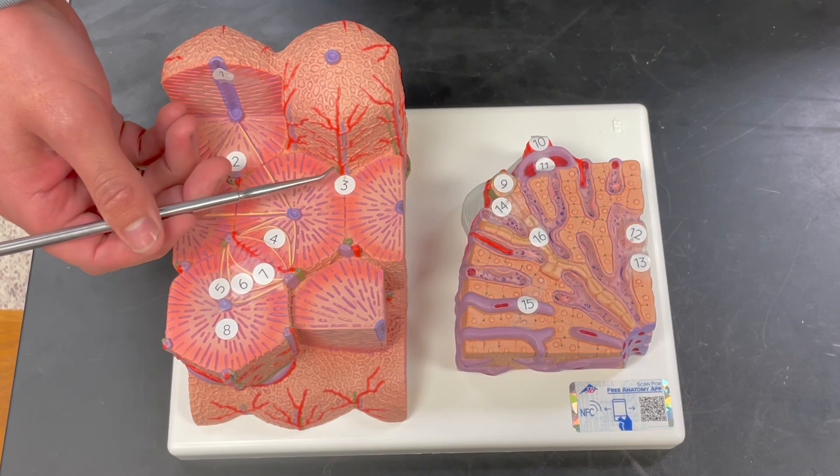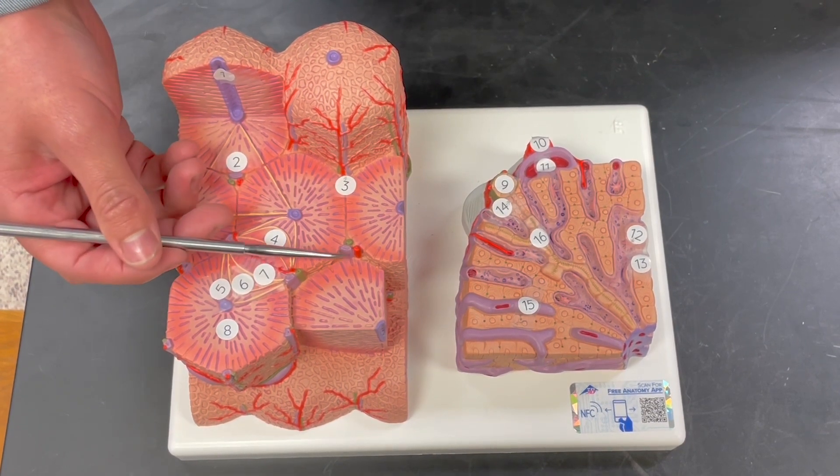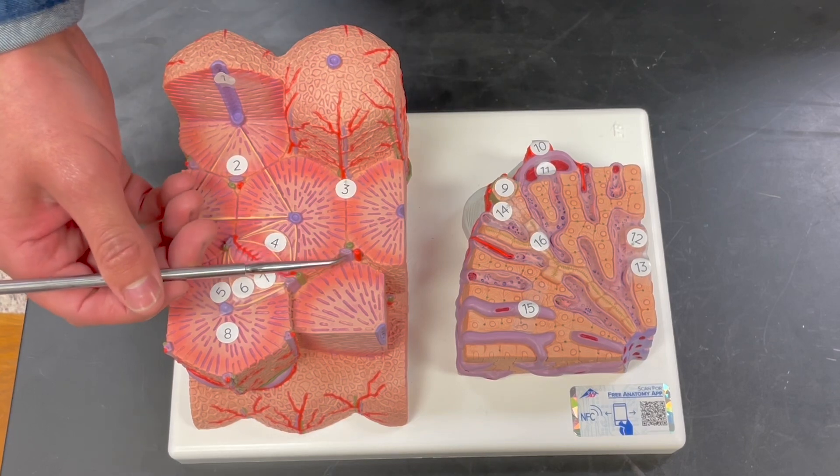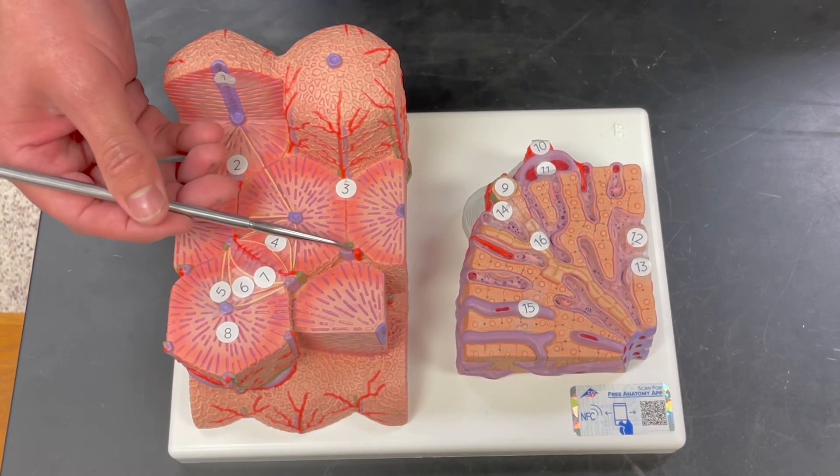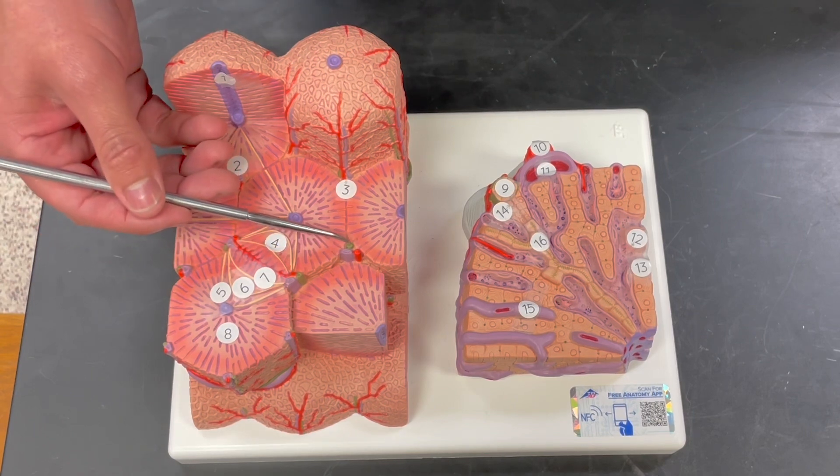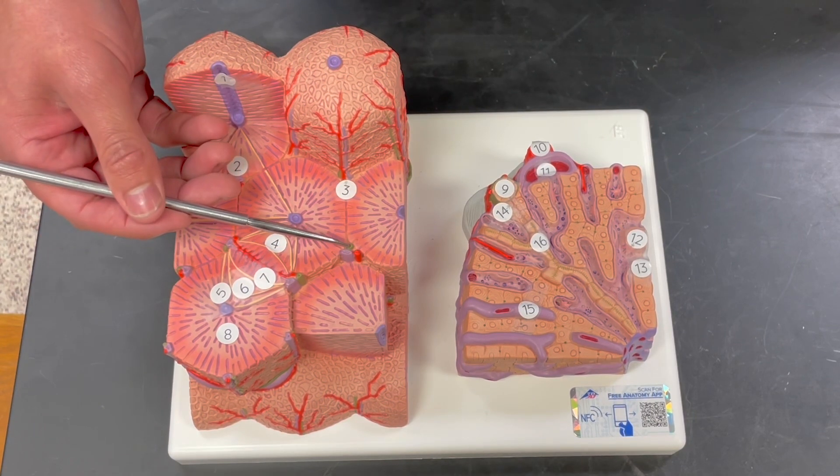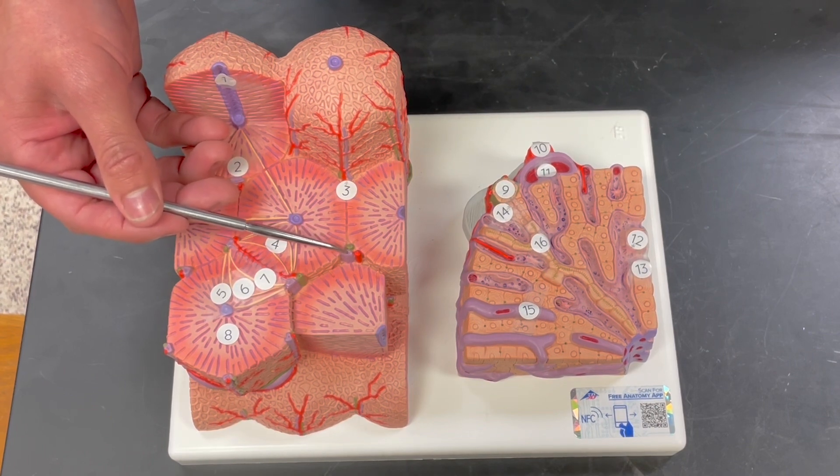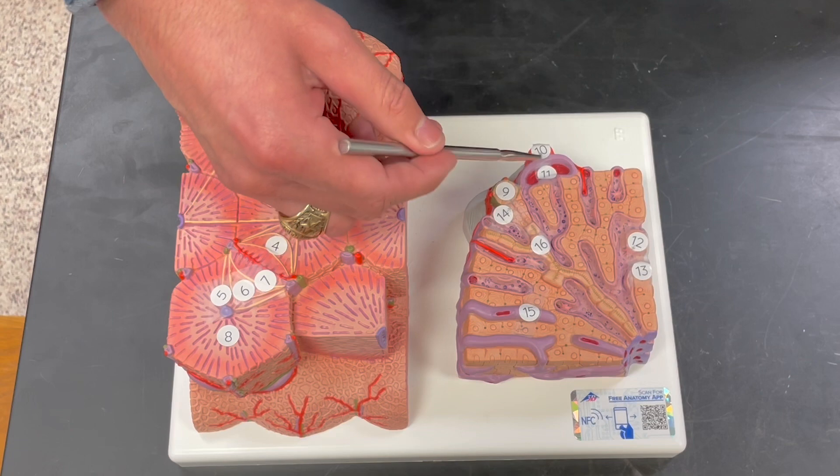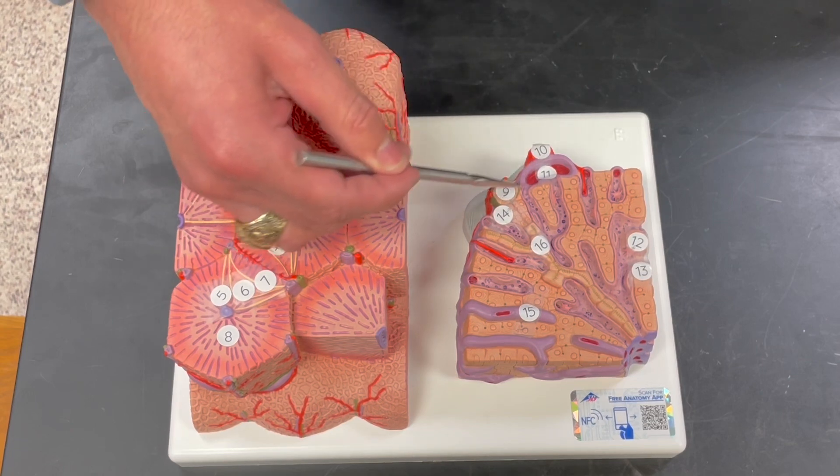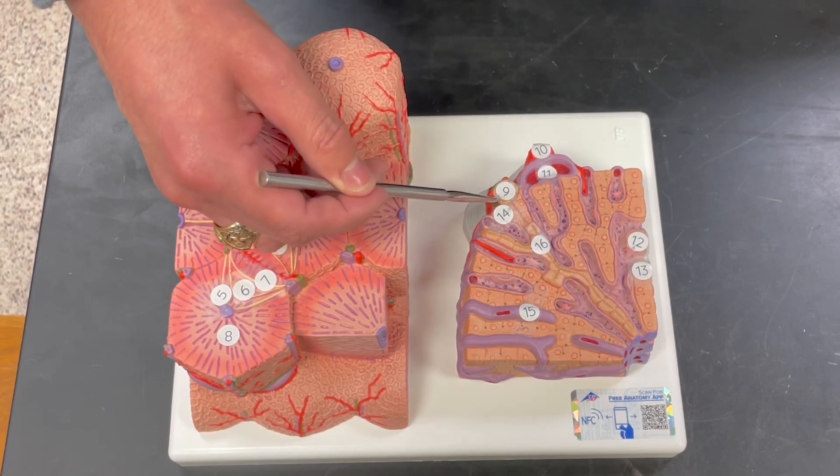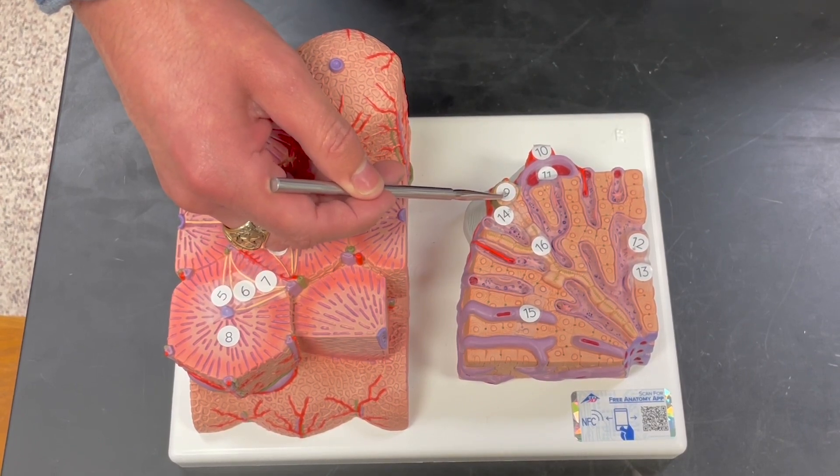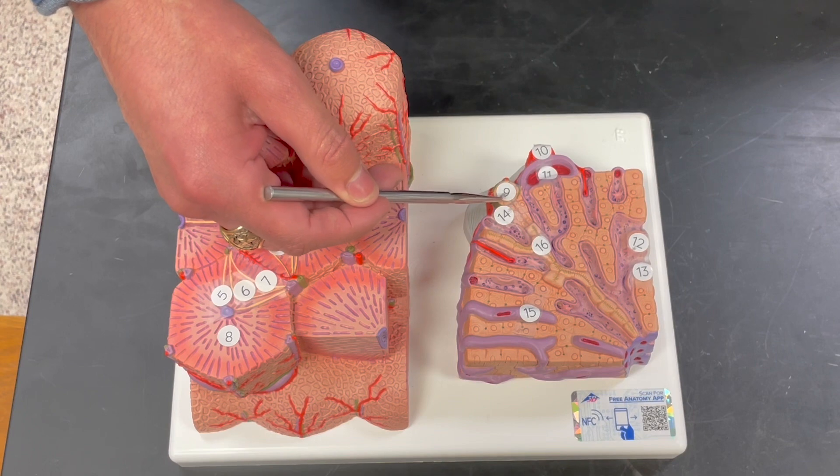The portal triad includes these three structures here: the interlobular vein, the interlobular artery, as well as the interlobular bile duct. I have it labeled over here as: artery is there, vein is 11, and nine is the bile duct.